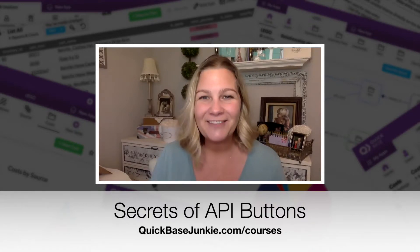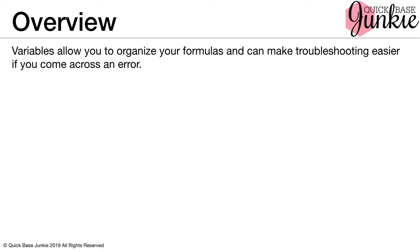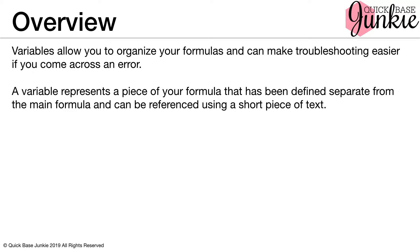Now check out the video. Now that we've covered the basics for building a URL formula button for APIs, we'll now dive into using variables. Variables allow you to organize your formulas and can make troubleshooting easier if you come across an error. A variable represents a piece of your formula that has been defined separate from the main formula and can be referenced using a short piece of text.